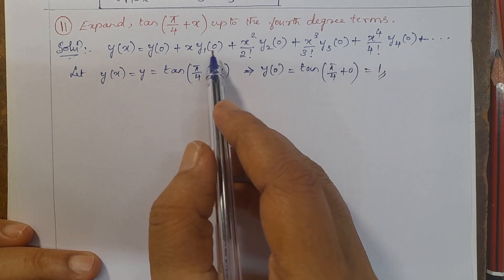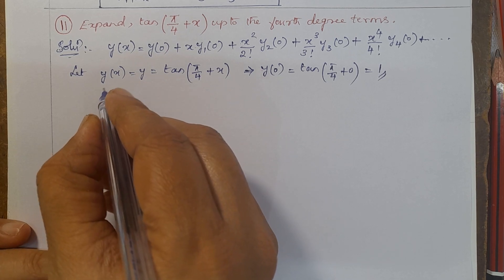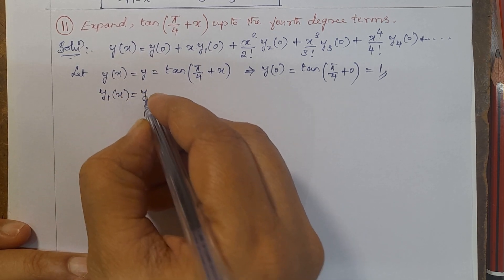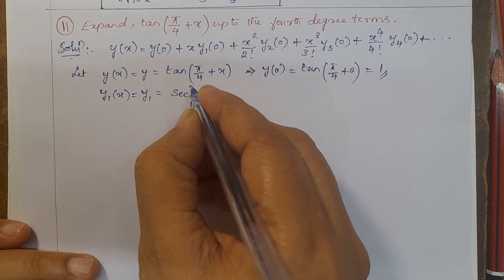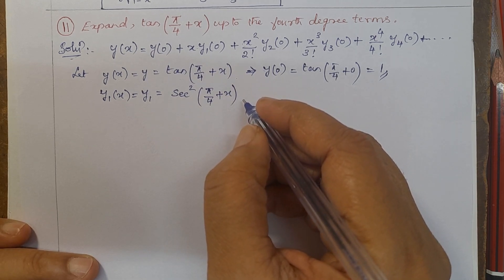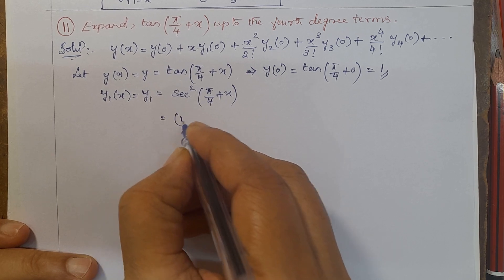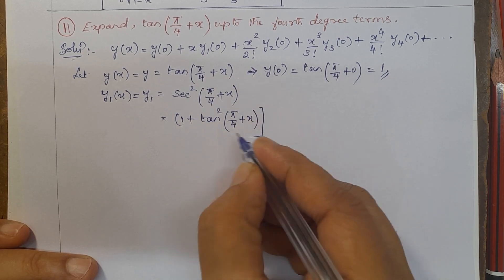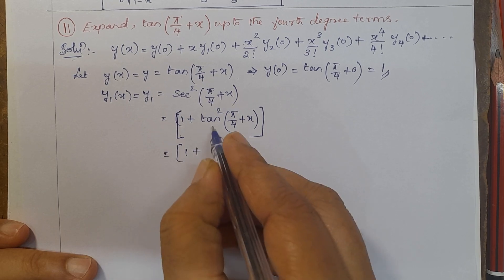Next, find y1(0). Differentiating y(x), we get y1(x) = sec²(π/4 + x). Using the trigonometric identity sec²θ = 1 + tan²θ, this becomes y1(x) = 1 + tan²(π/4 + x).